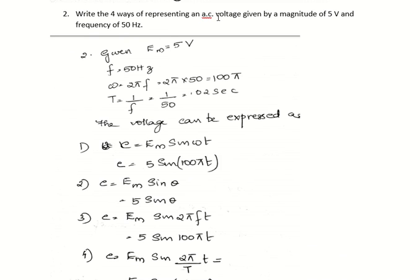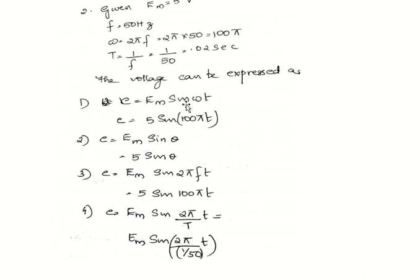Next question: write the four ways of representing an AC voltage with magnitude 5 volts and frequency 50 Hz. The maximum value EM is 5 volts and frequency is 50 Hz. Omega = 2πf = 2π × 50 = 100π. Time period T = 1/frequency = 1/50. The four different forms are: E = EM sin omega t, E = EM sin theta, E = EM sin 2πft, and E = EM sin(2π/T × t). Substituting the values gives the different representations.